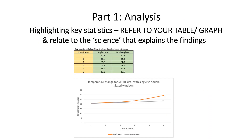What I suggest is dividing the discussion into three sections. Each section will have roughly a paragraph, possibly two paragraphs, dedicated to addressing the criteria. The first section is the analysis of the data. Let's zoom in here and look at the statistics generated from my mock trial.